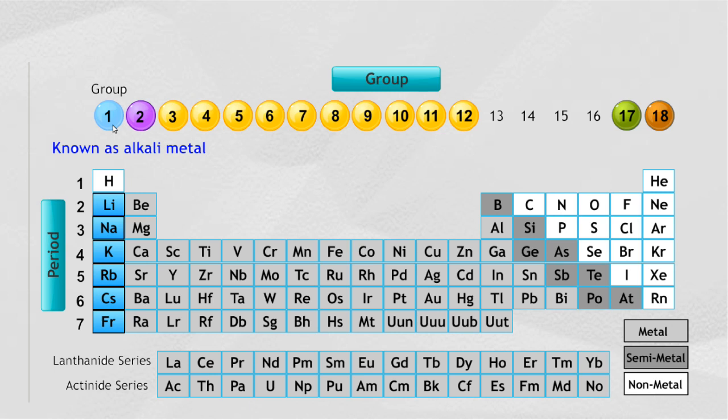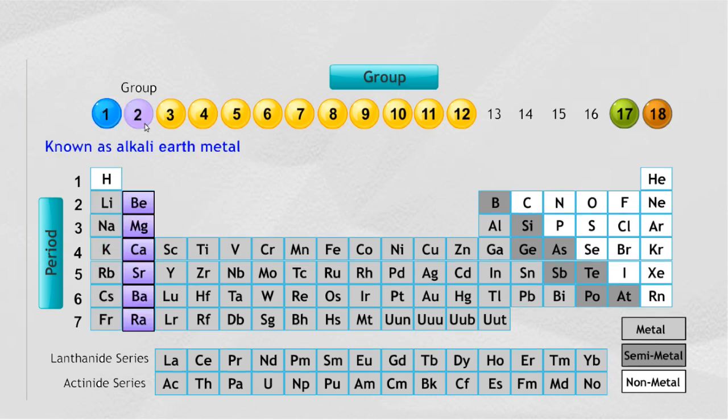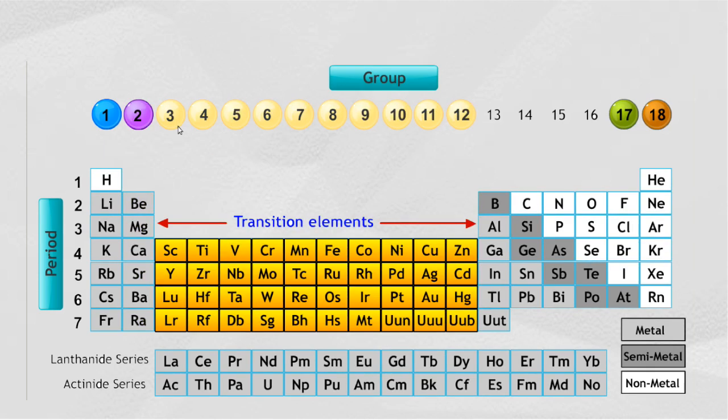On the left of the periodic table is a group of metals which are highly reactive and known as alkali metals. To the right of those is made up of metals known as alkaline earth metals. All the elements in the following group are considered transition metals.